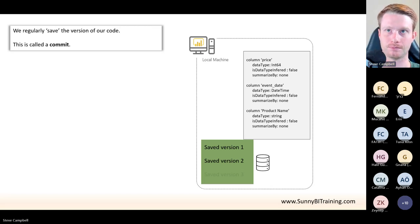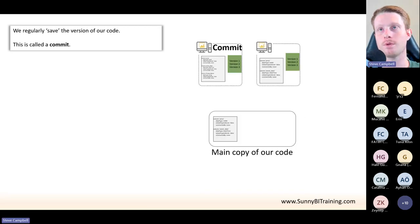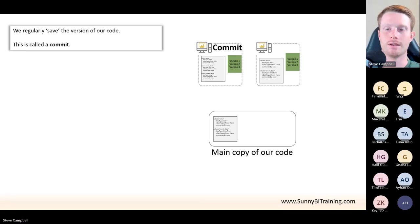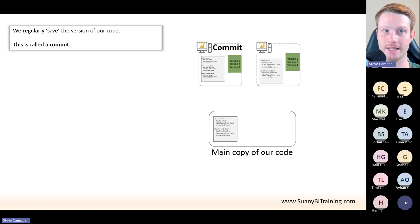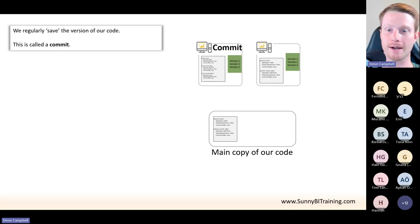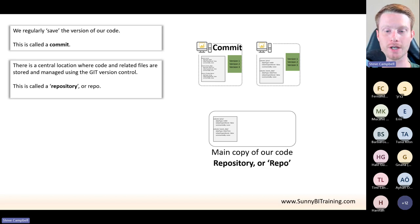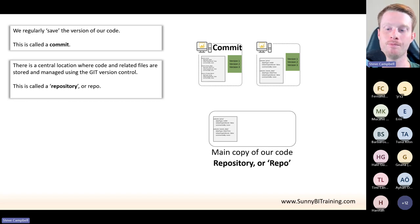So one thing we said is Git is what we call a distributed version control system. We have multiple people working on their own little copies of the code. We're all saving this locally, committing it into our little database, doing this independently. Now obviously we'll need some main copy of the code where once we've done our changes we have to put them back. So we have this main copy of our code, and what we call this is a repository — or most people call it a repo.